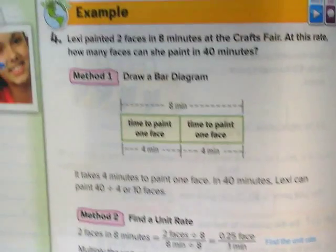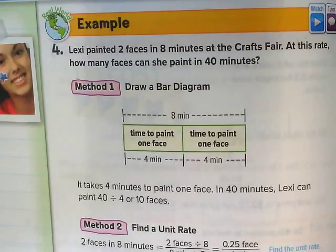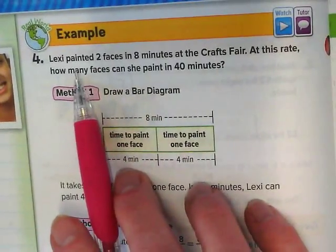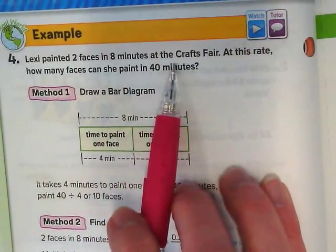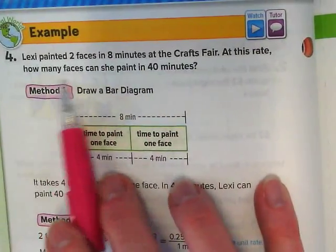If you haven't turned to page 12, please be there now. Our final example, example 4, says Lexi painted two faces in eight minutes at the craft's fair. At this rate, how many faces can she paint in 40 minutes?